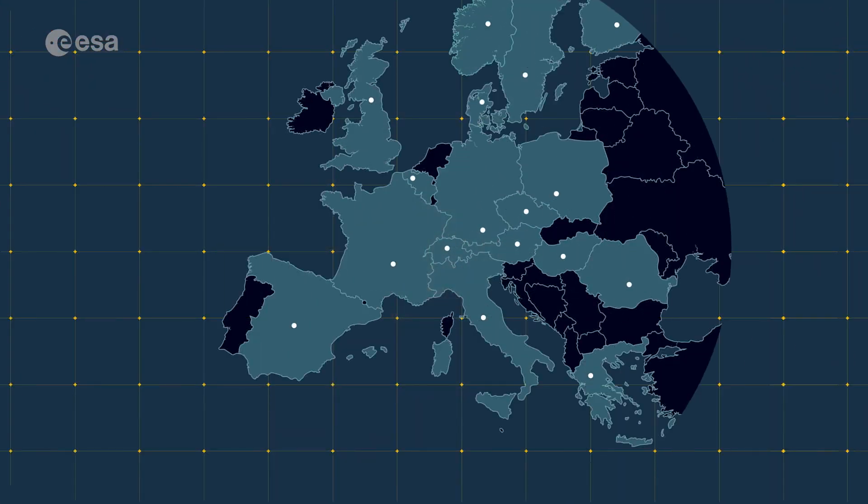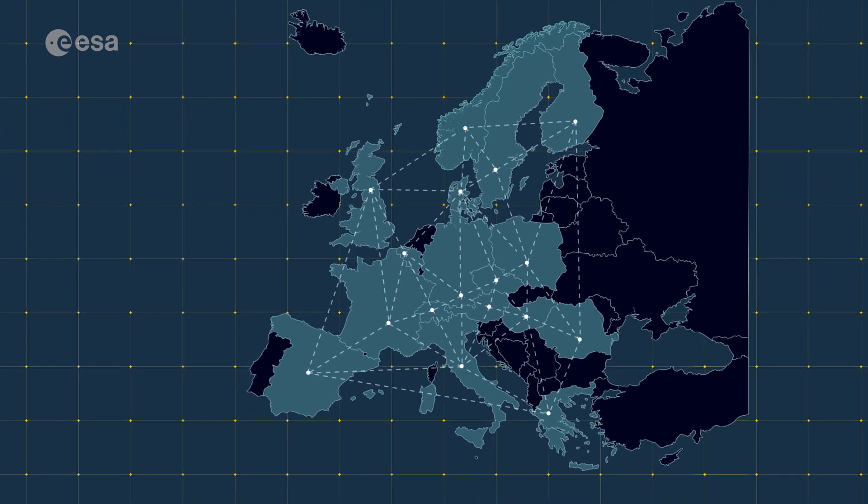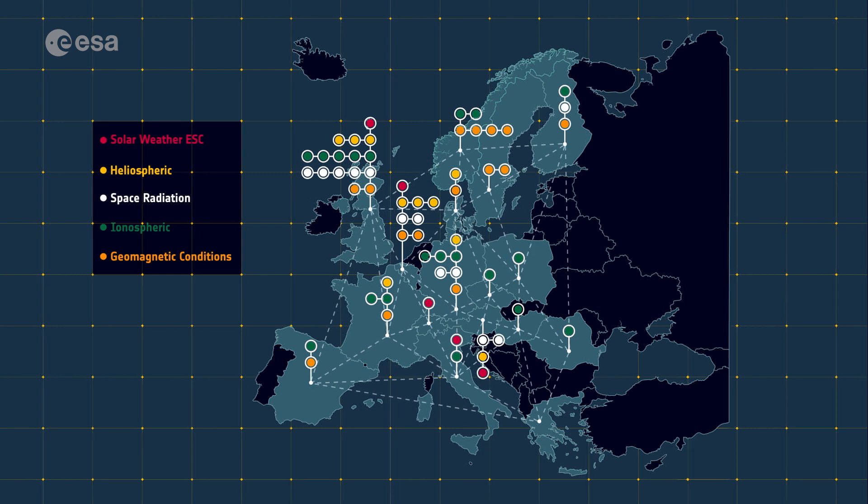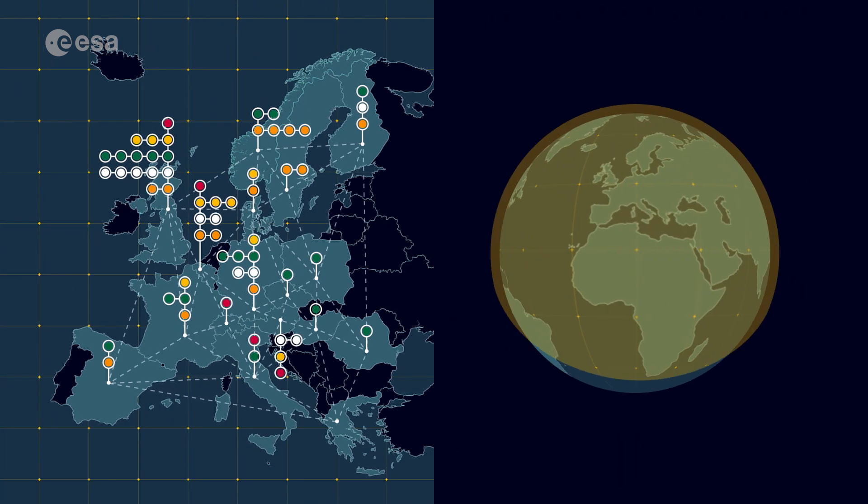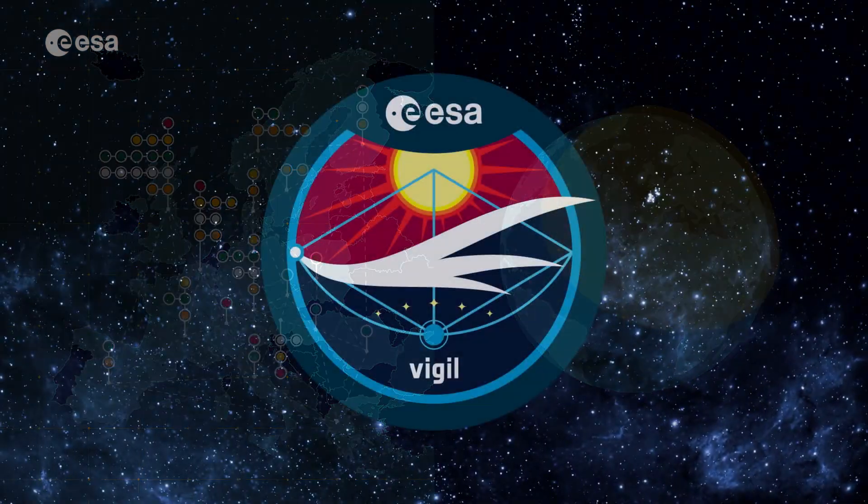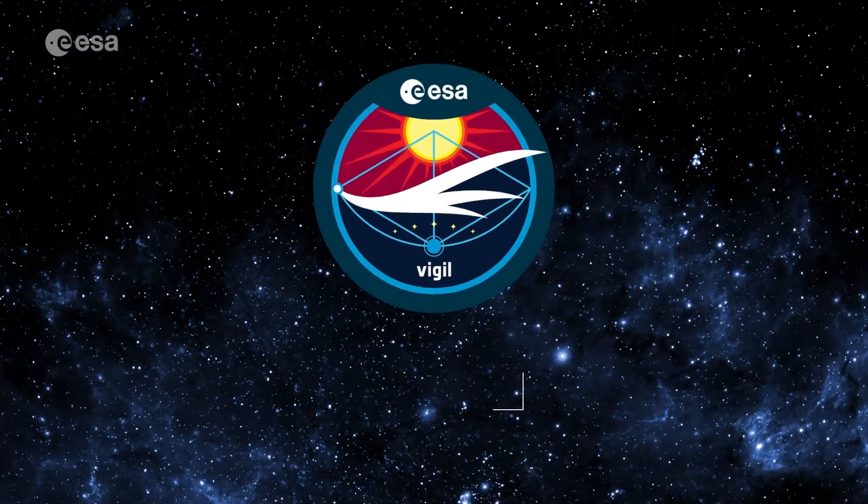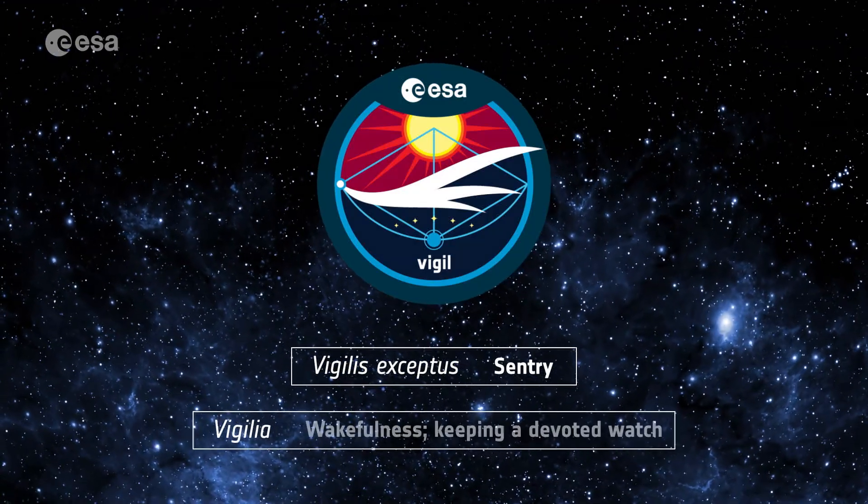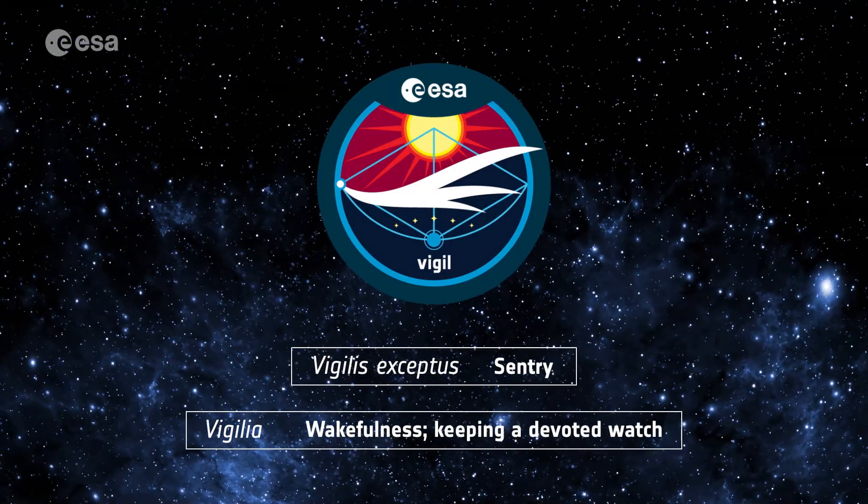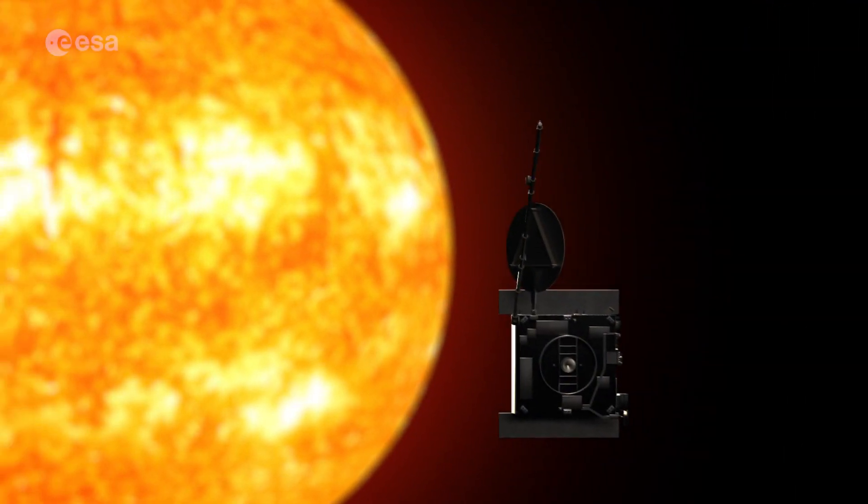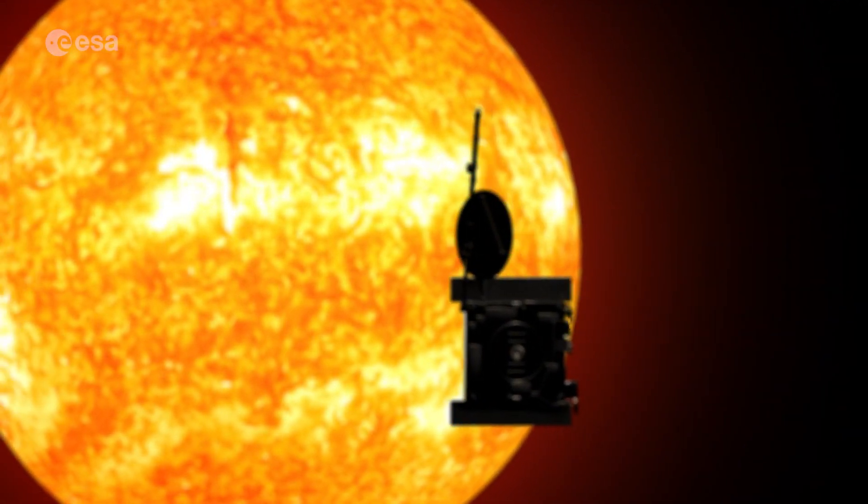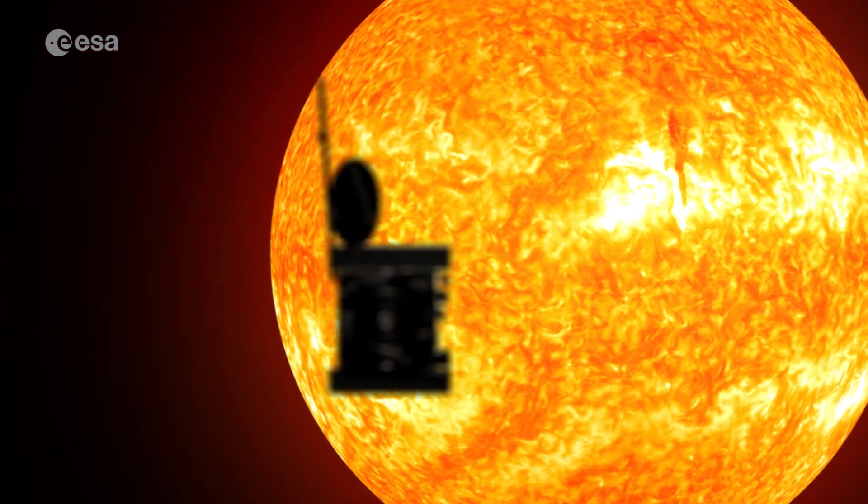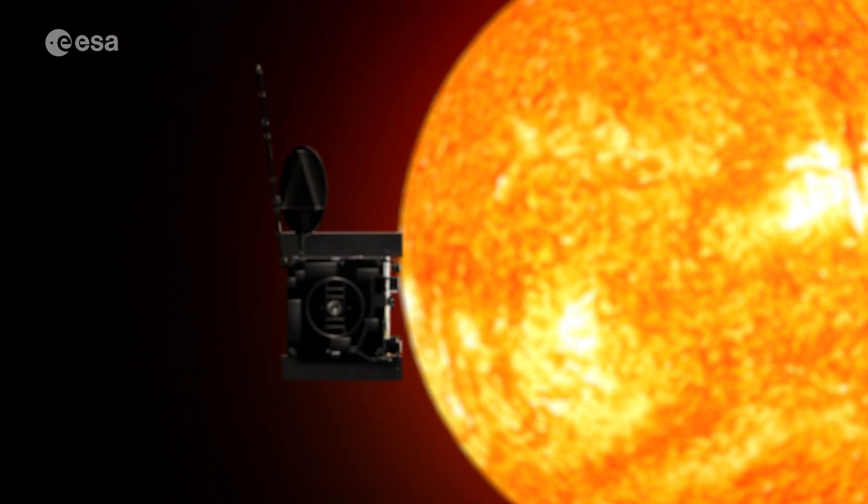Data from Vigil will stream into ESA's Space Weather Service Network, where it will be processed into practical information and shared quickly and freely, giving us time to act. Named Vigil from the Latin Vigilis Acceptus, meaning Sentry and Vigilia for wakefulness and keeping a devoted watch, ESA Vigil will soar into the dark skies, keeping a constant, careful eye on the Sun to help protect our modern lives and even life itself.